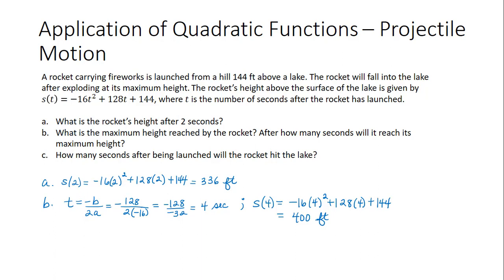And then part C says, after how many seconds will the rocket hit the lake? So that is, when will the height above the lake be zero? That asks us to solve the equation negative 16t squared, plus 128t, plus 144 is equal to zero. All of those values are divisible by 16, so we can divide that equation through by negative 16 to get an equivalent form, which is t squared minus 8t minus 9 is equal to zero.